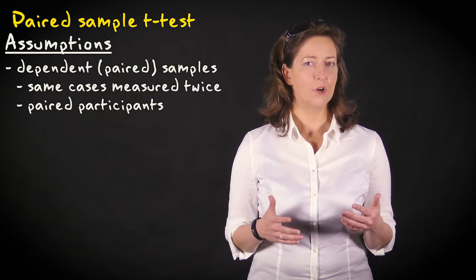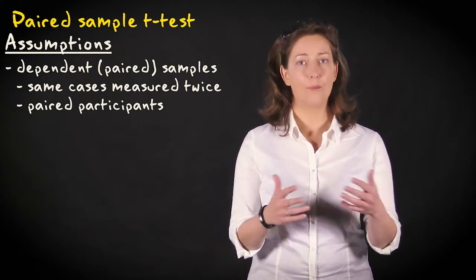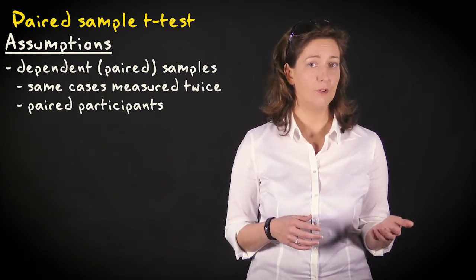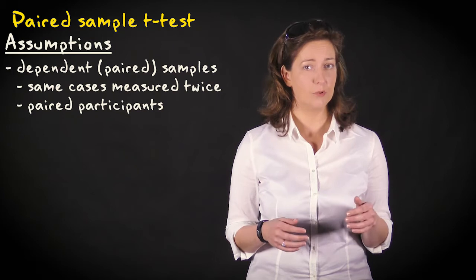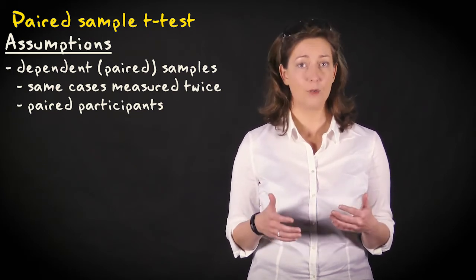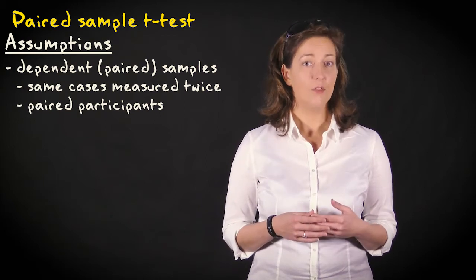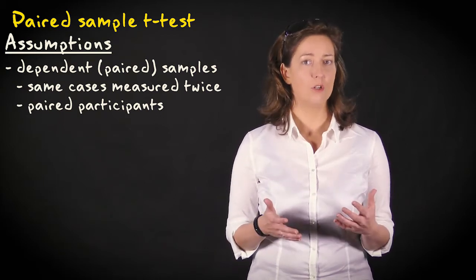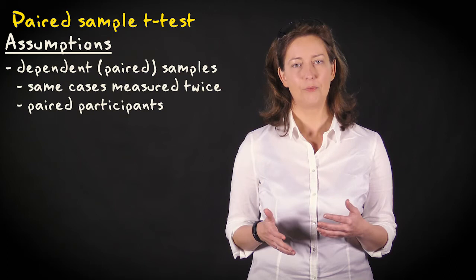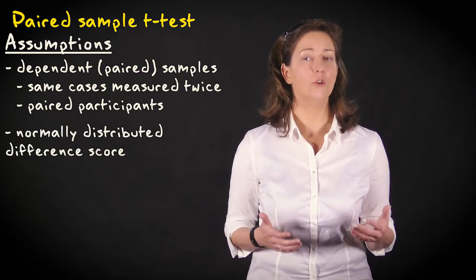The samples are dependent or paired, which means the samples consist of repeated measurements obtained from the same participants, or different measurements of paired participants. In both cases, the difference scores of the paired observations are used in the paired t-test. These difference scores are assumed to be distributed normally.